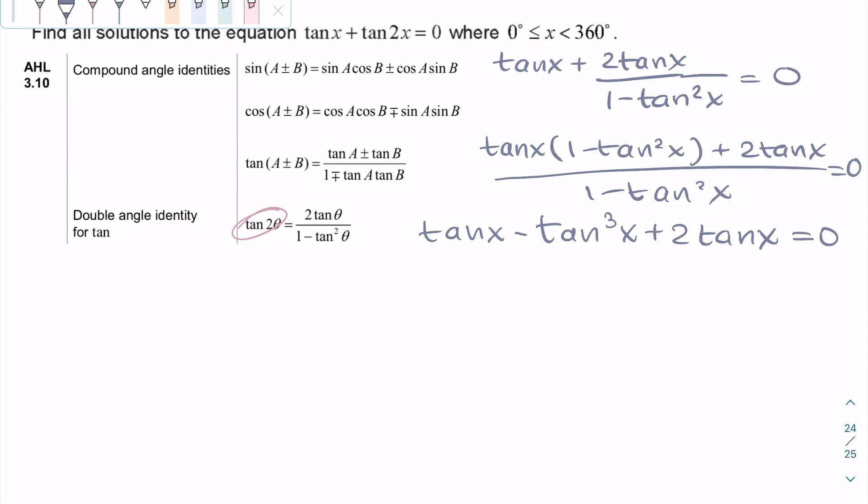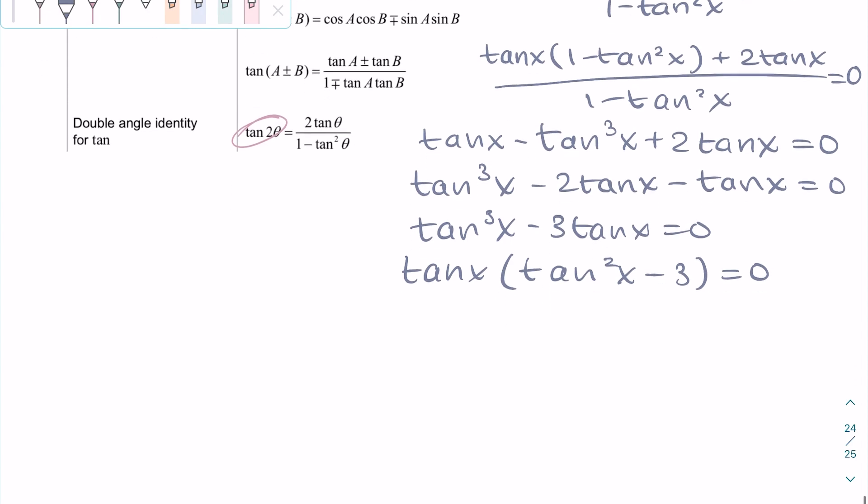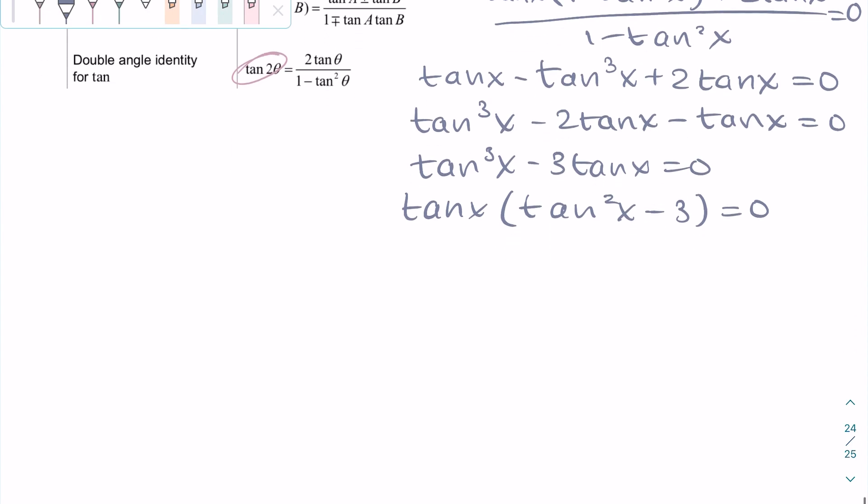Now we can open the parentheses and we get tan x minus tan cubed x plus 2 tan x equals 0. We can rearrange the terms a little bit and remove the negative from the tan cubed x and then we can factorize. For the equation to be 0, either one of the factors must be 0.